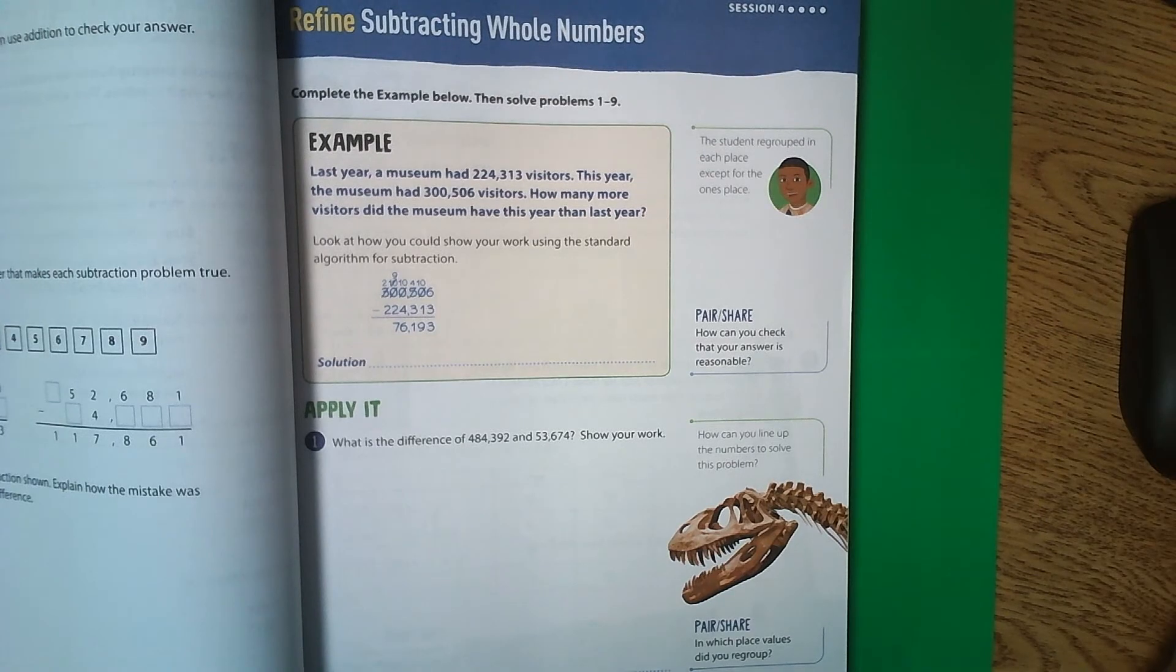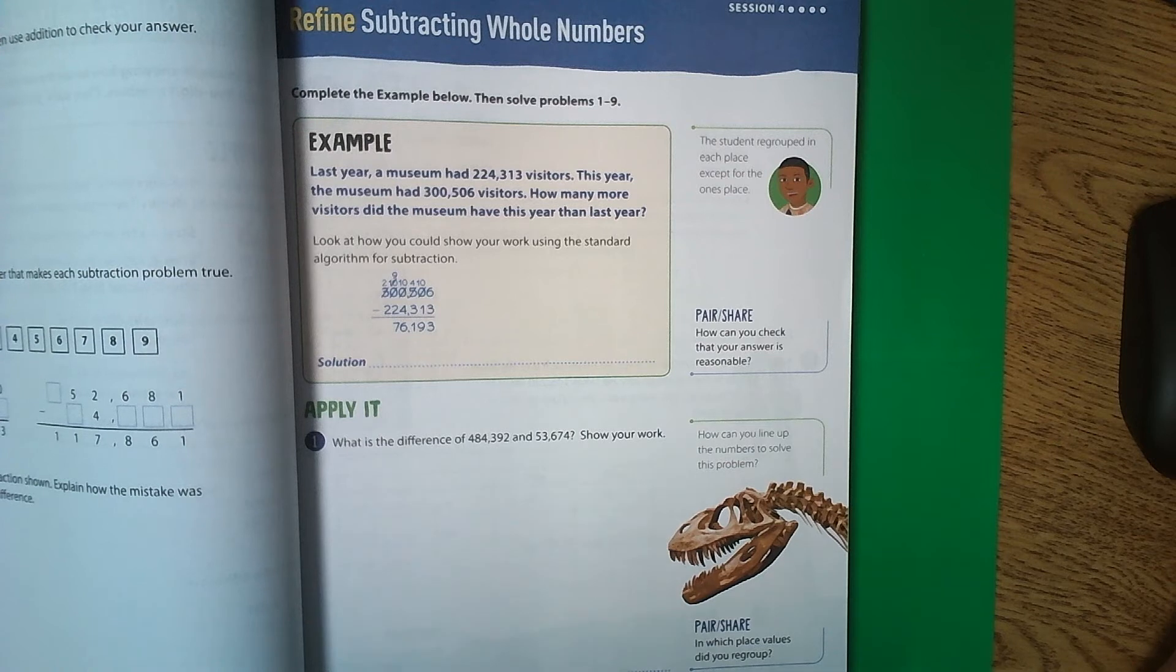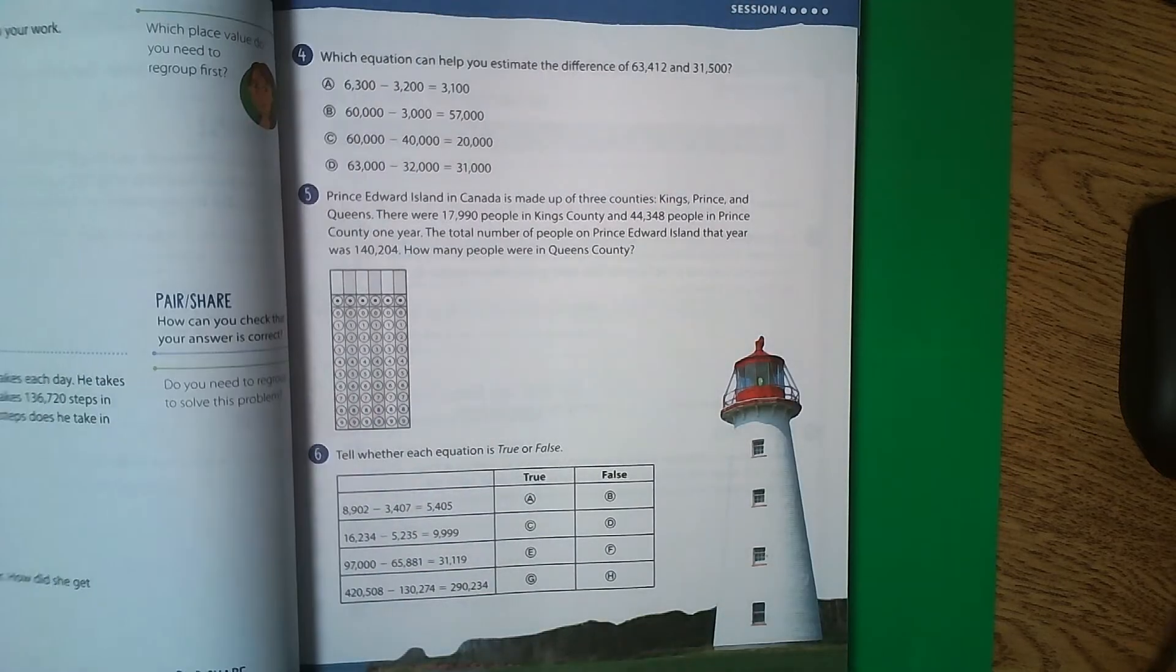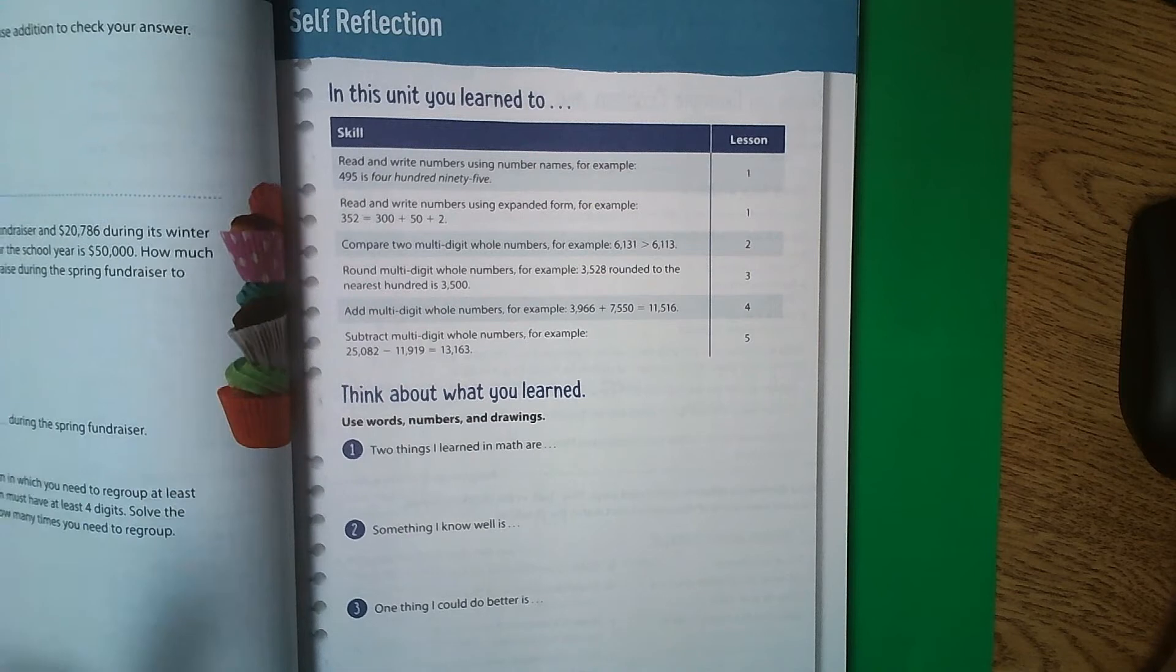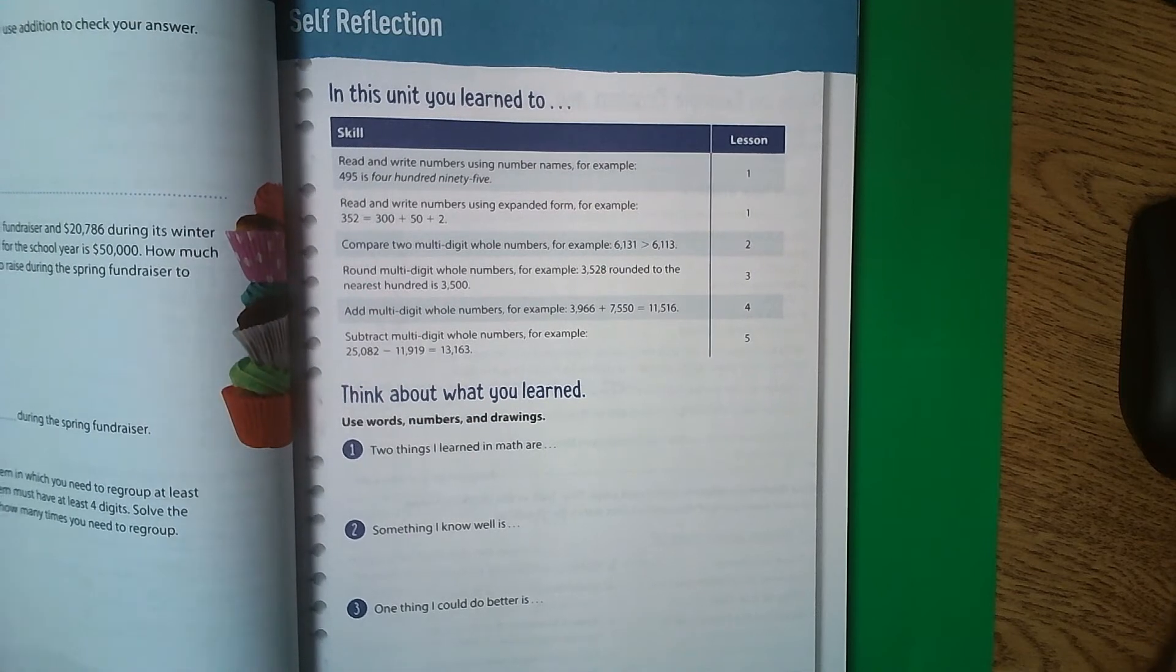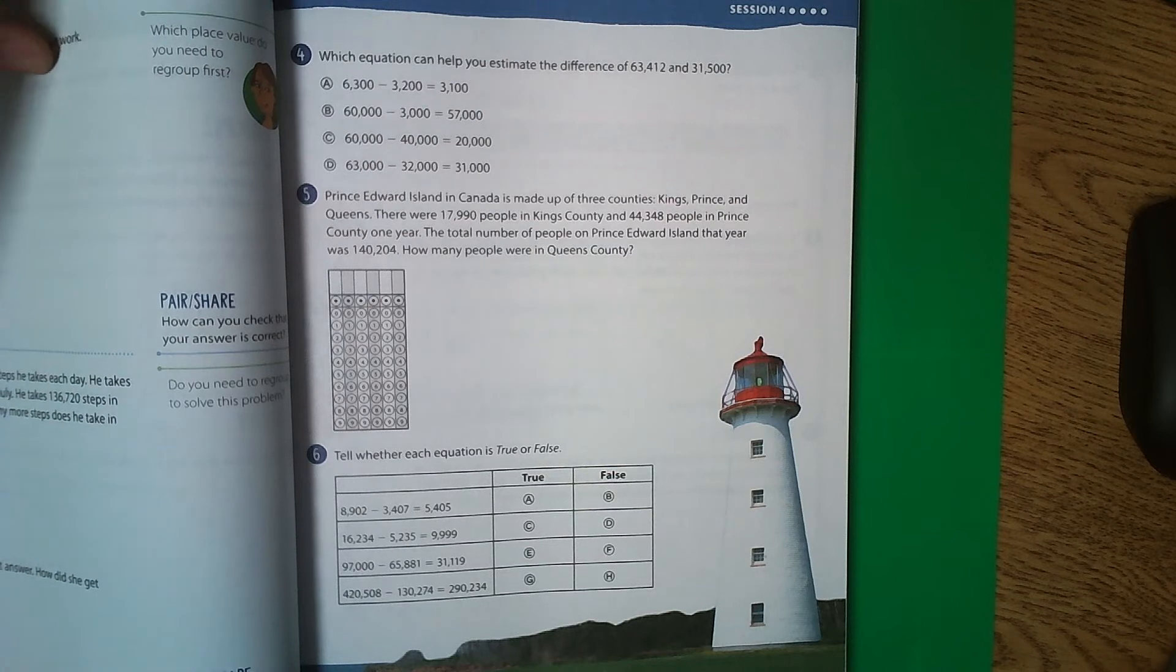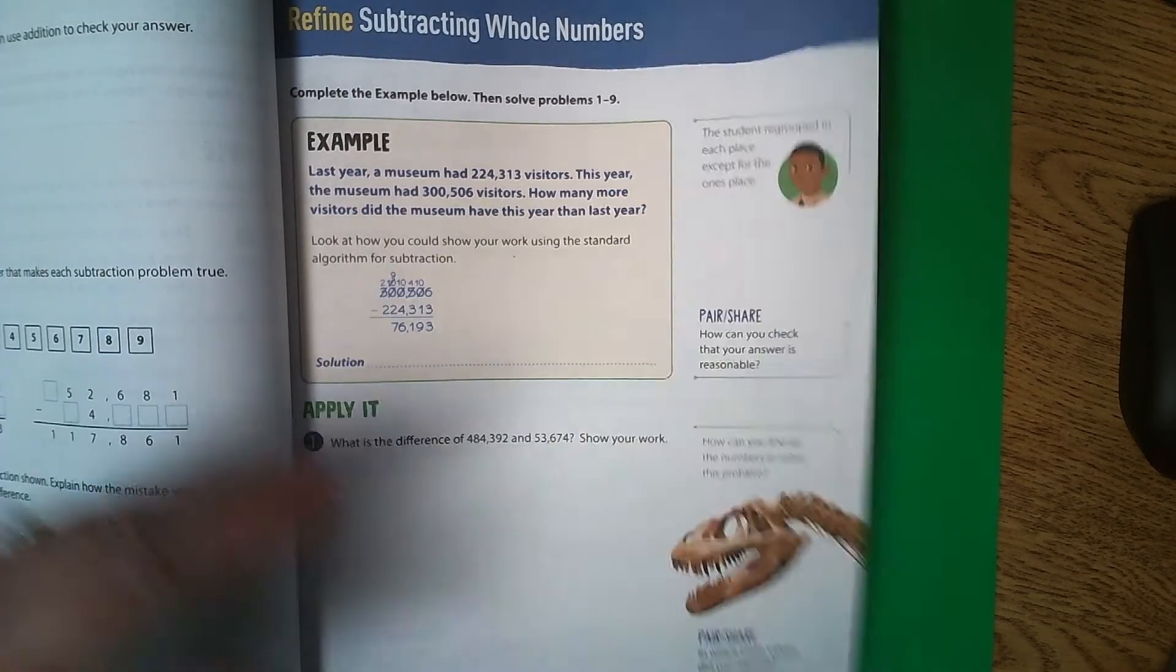This is Lesson 5, Ready Classroom Mathematics, Session 4, Subtracting Whole Numbers. Students, in your math book you should complete pages 87, 88, 89, and 90 before you watch this video.